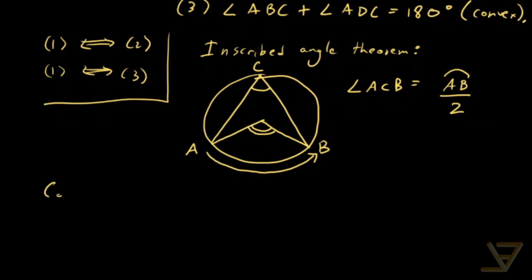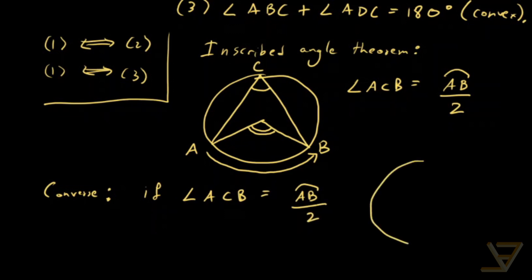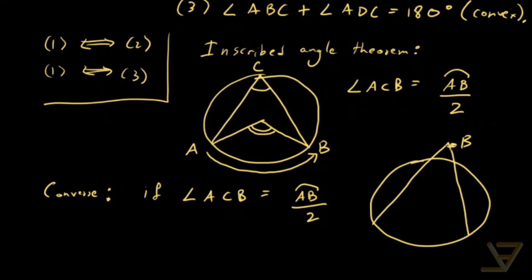The converse holds as well. The converse of the inscribed angle theorem says that if angle ACB is equal to arc AB over two, then the point C actually lies on the circle — not outside or inside it, but on the circle. So this converse establishes that a point actually lies on the circle, and we're going to be using both the inscribed angle theorem and its converse.